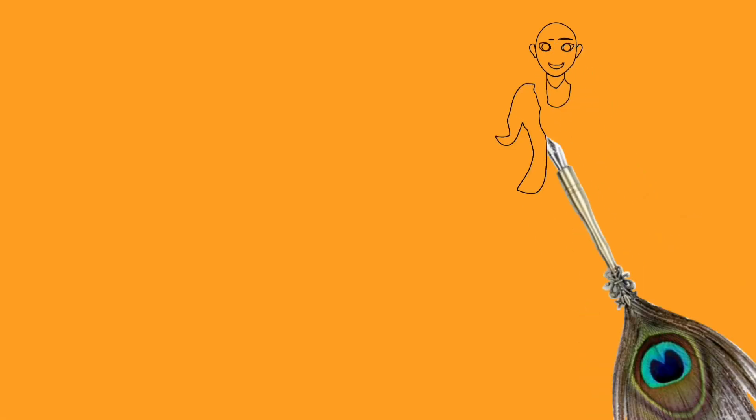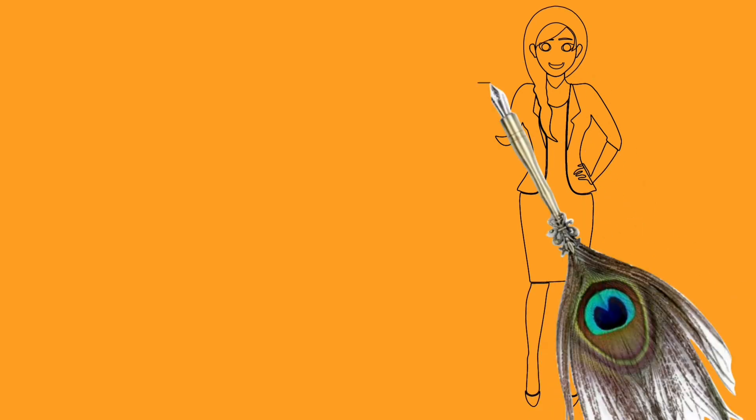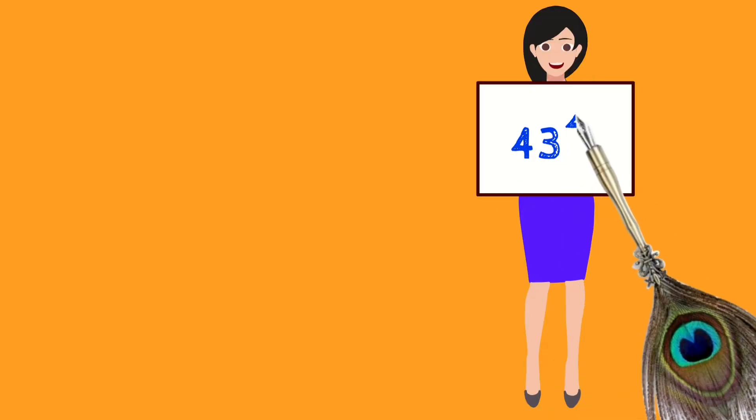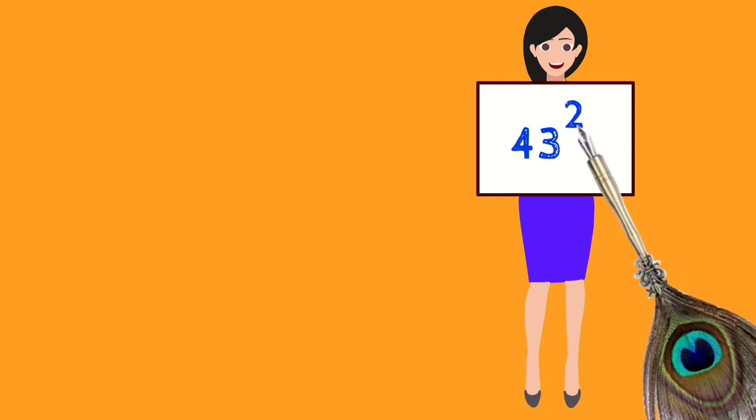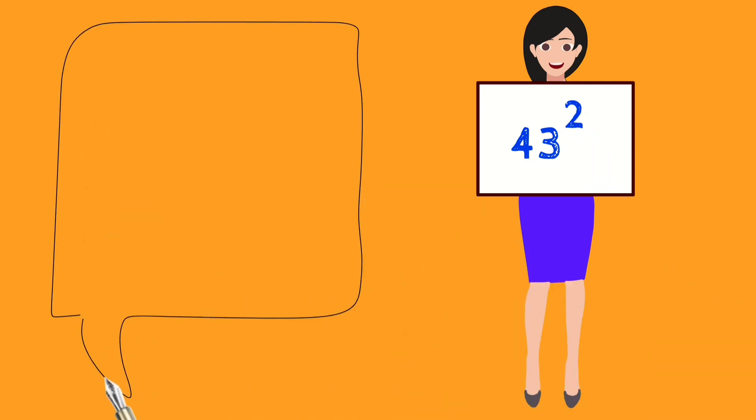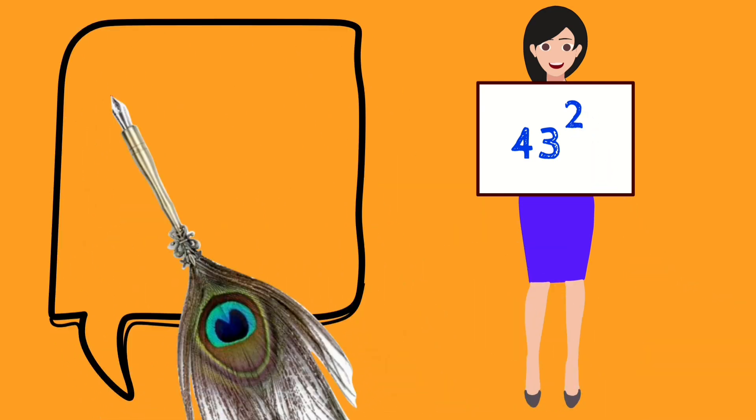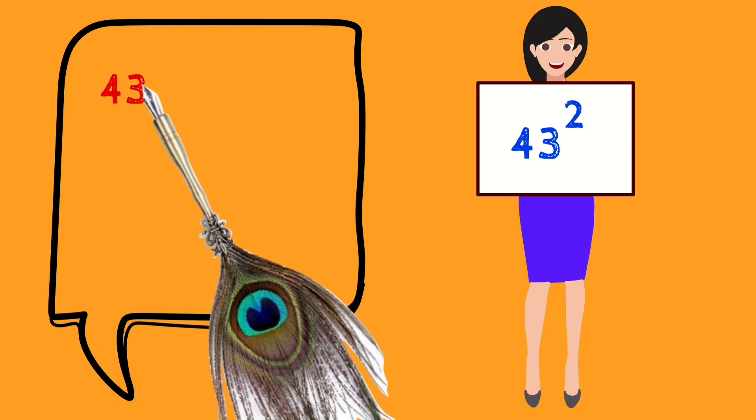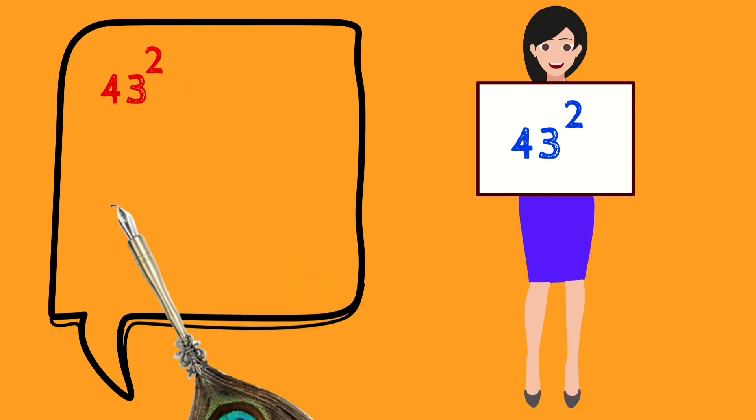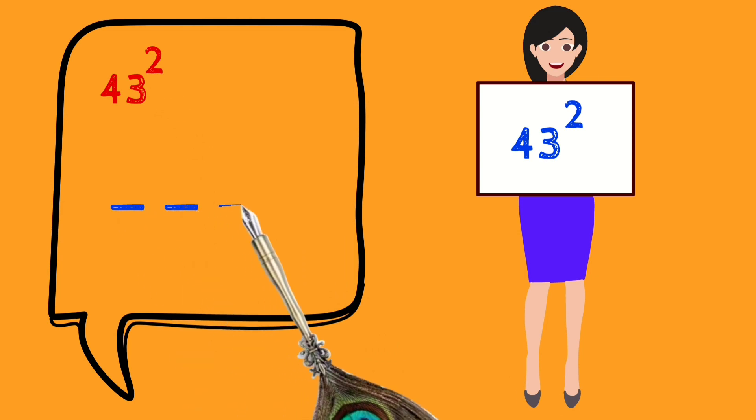Let me show you how with an example. Let us take a two-digit number, 43. To find the square of this number, we can't easily tell the answer with mental calculation. So for finding the square easily, now consider four blanks.